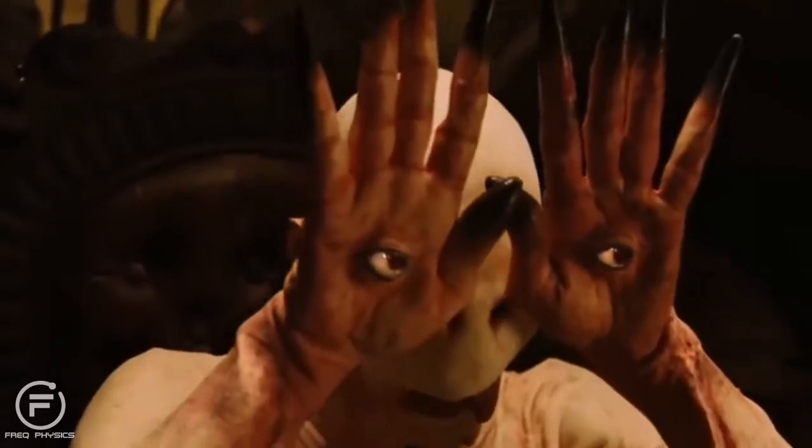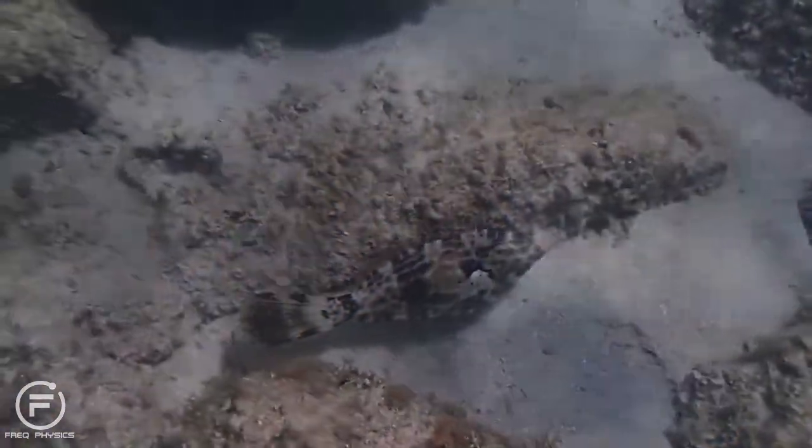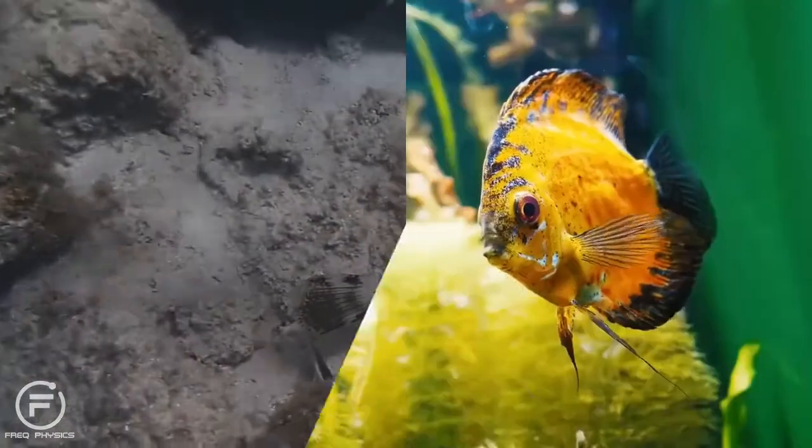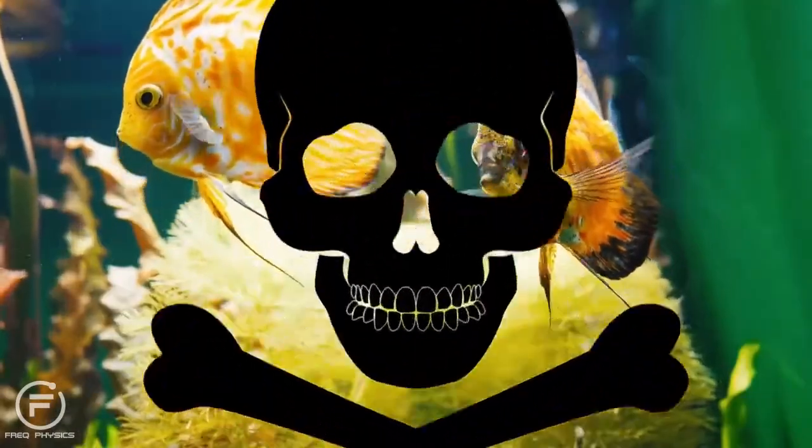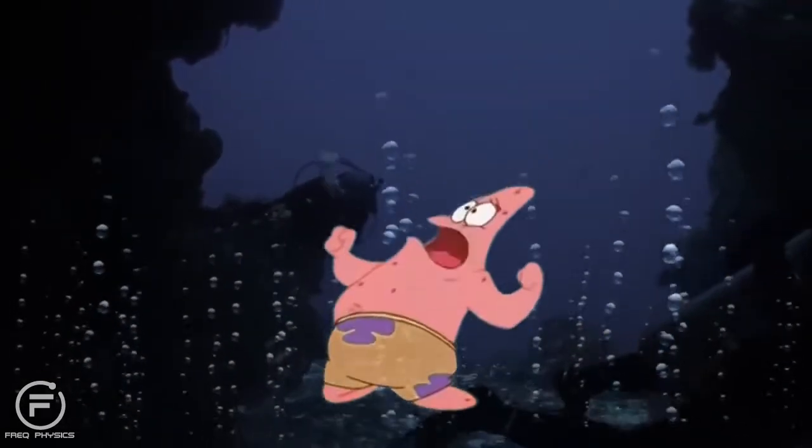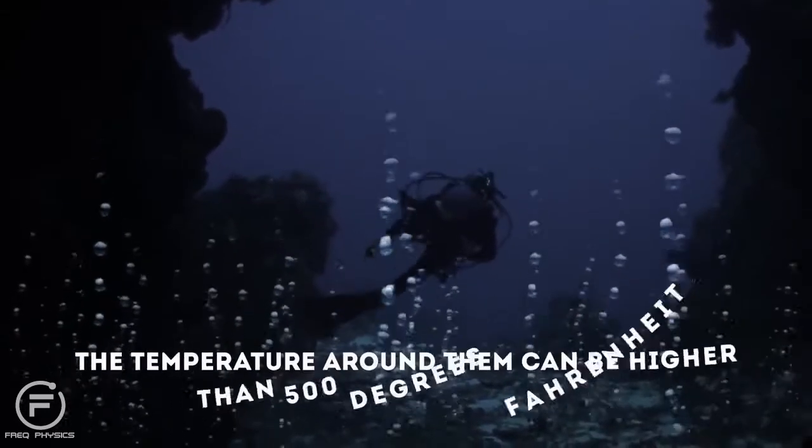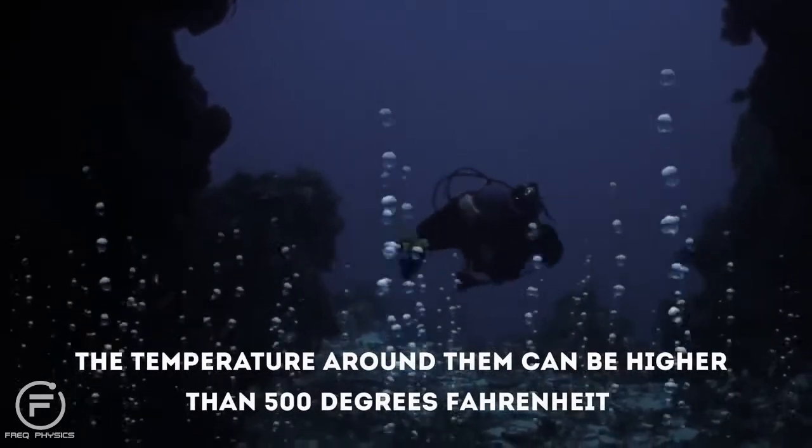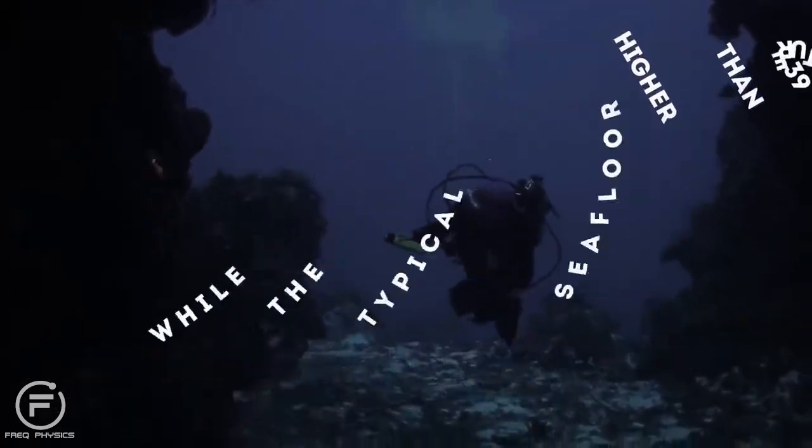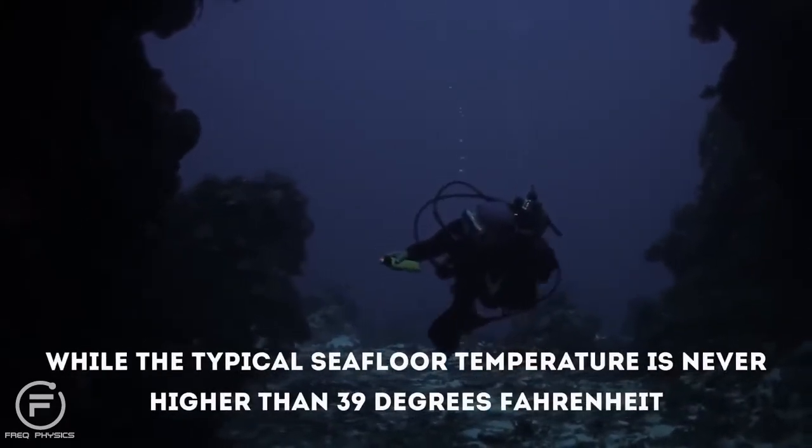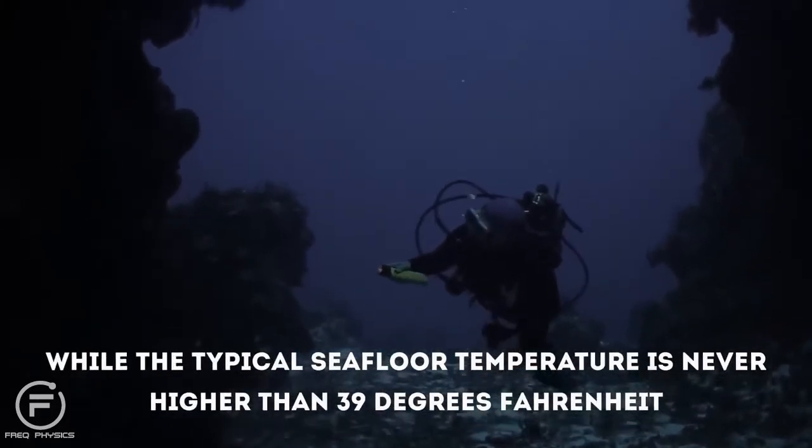All these creatures look like horror film monsters, but perhaps it's just the nature of their environment. The cute ones wouldn't survive in the harsh conditions of the Mariana Trench. At its floor, there are hydrothermal vents spewing out extremely acidic fluids. The temperature around them can be higher than 500 degrees Fahrenheit, while the typical seafloor temperature is never higher than 39 degrees Fahrenheit.